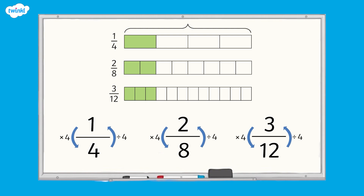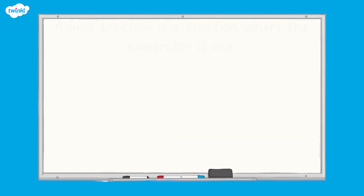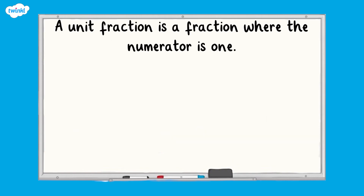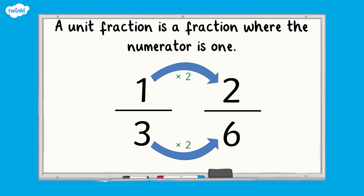Now let's take a look at how we can identify equivalent fractions without using visual representations. Here we have the unit fraction one third. Remember, a unit fraction is a fraction where the numerator is one. To find an equivalent fraction, we can simply multiply the numerator and the denominator by the same number. So if we multiply the numerator and the denominator by 2, we will get the fraction two sixths.